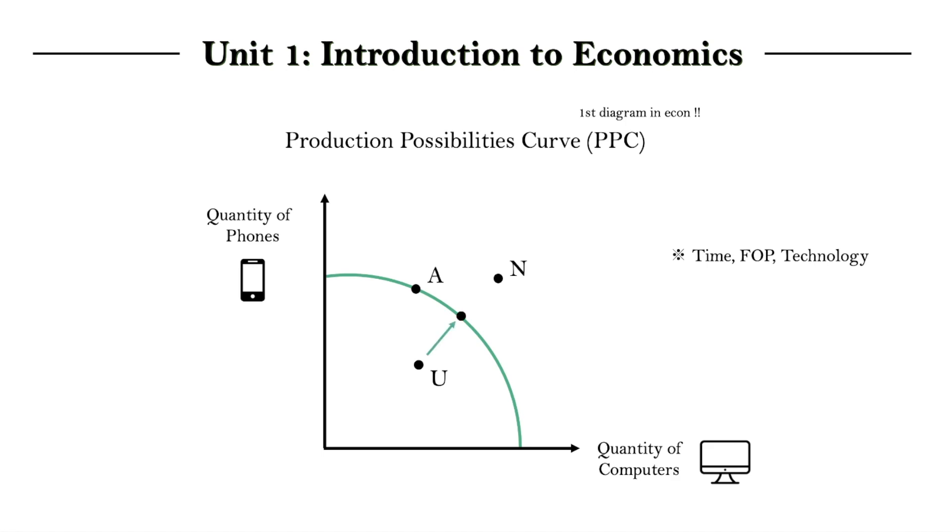where we used to produce less at Q1 and Q3 and now produce more on the curve at Q2 and Q4 where Q just stands for quantity. And this increase in output from Q1 to Q2 for computers and Q3 to Q4 for phones is called actual growth. And I like to think of it as that we could have produced more and now we're actually producing more.